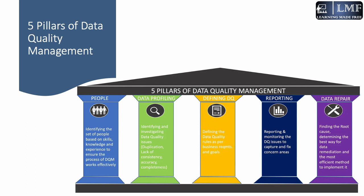What you see on screen are the five pillars of data quality management. The first and most important element is people — identifying the set of people based on skills, knowledge, and experience to ensure the process of DQM works effectively to deliver high quality data to the end users.